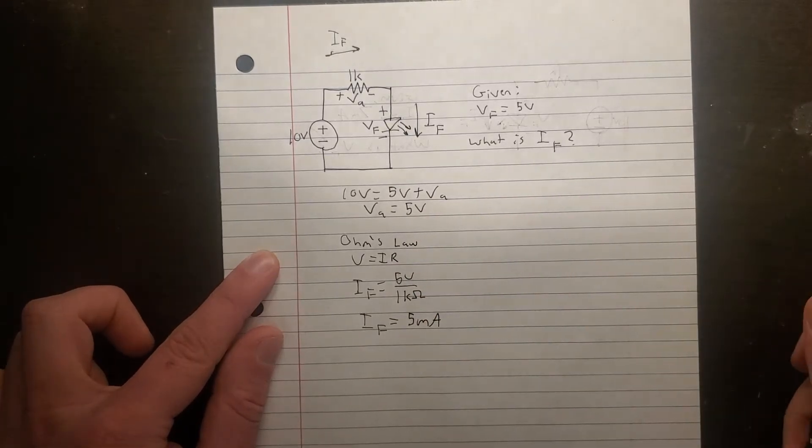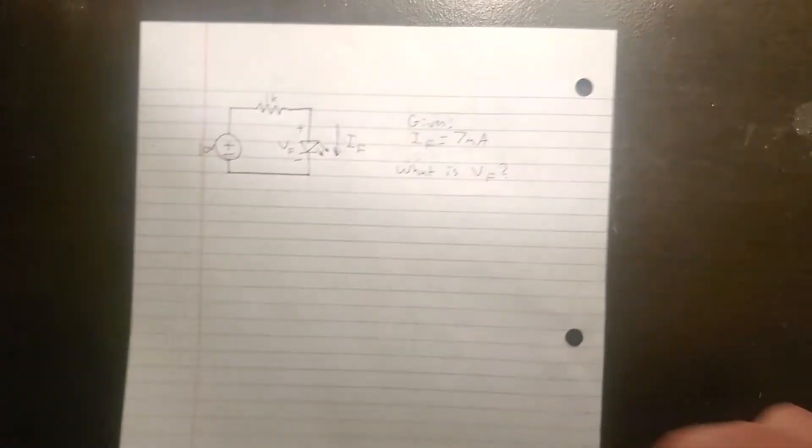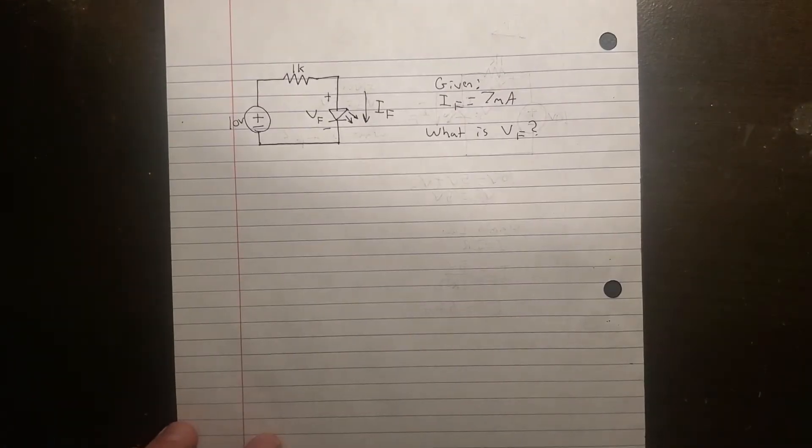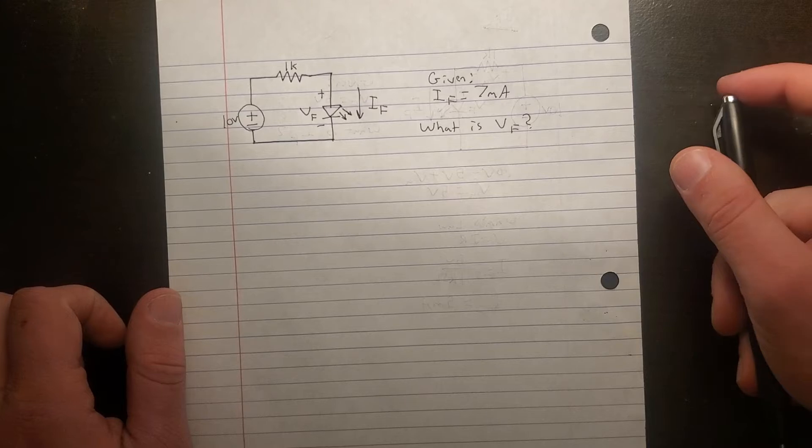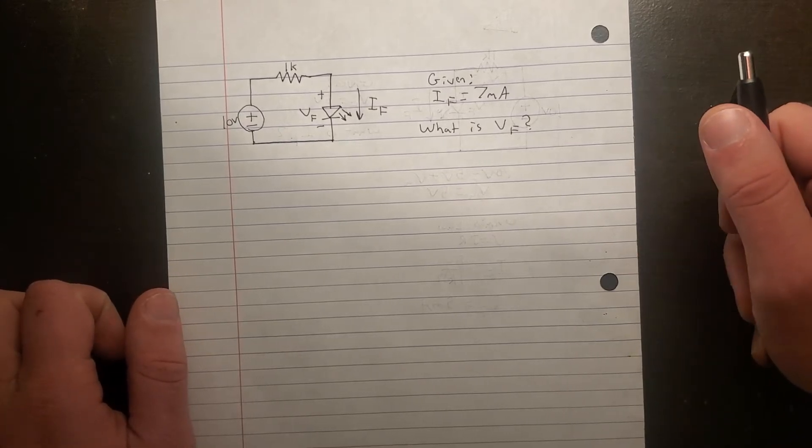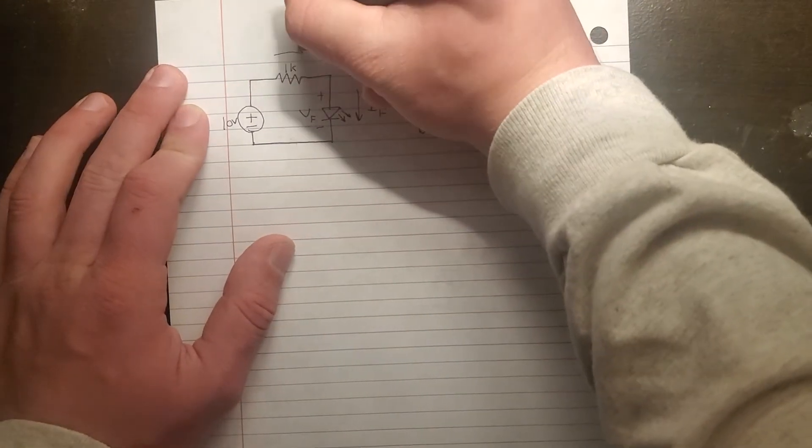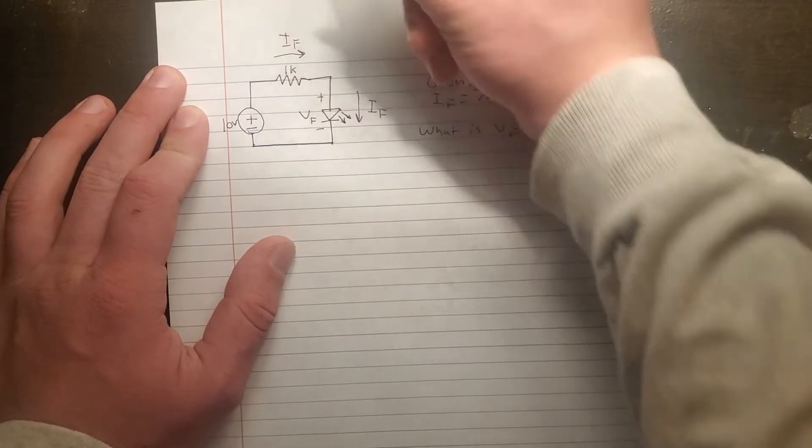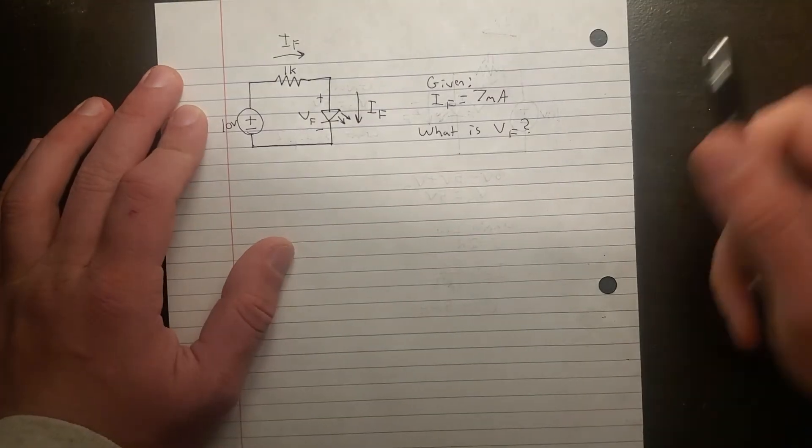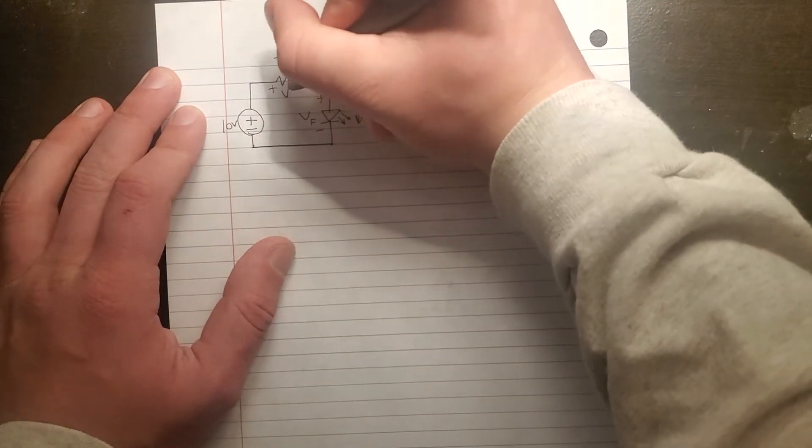Pretty straightforward, it's not that hard. Now, let's say we want to find the forward voltage instead. Well, it's the same exact steps, just a little different. So first, let's identify that's IF, because they're in series, so they have the same current. Let's make this VA once again.